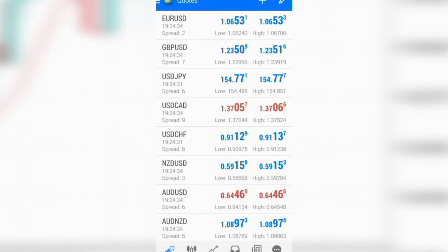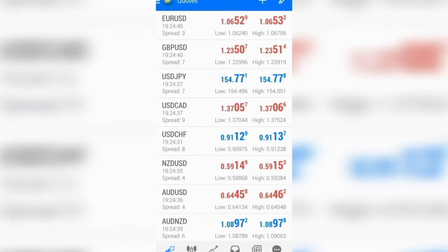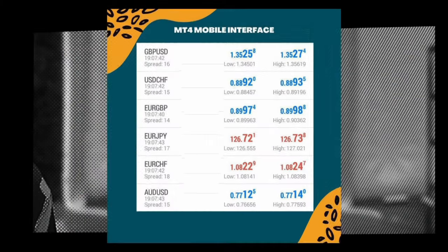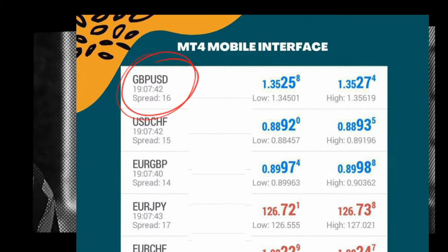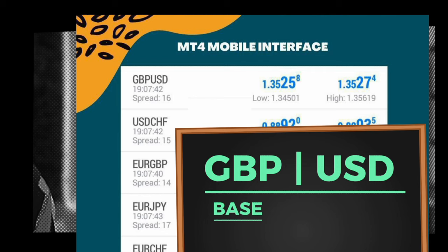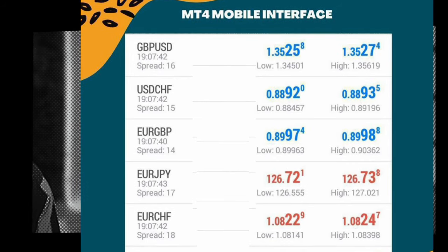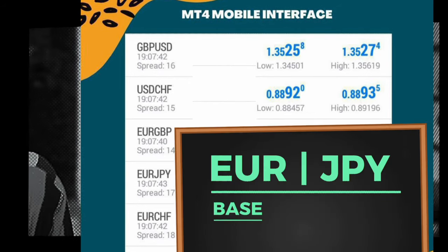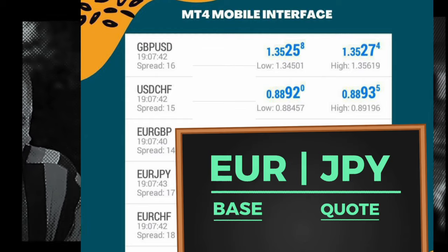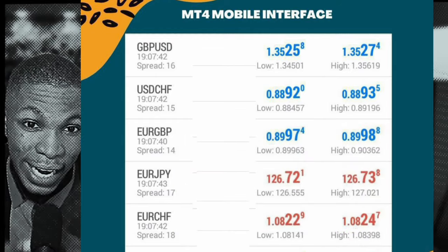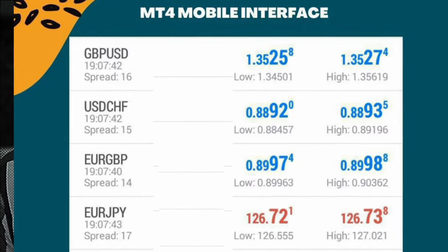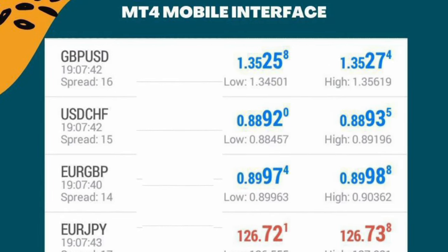I believe everyone has successfully opened their demo account and is on the currency pairs page. Let's take GBP/USD as an example — GBP is stronger than the US dollar, hence GBP is the base and USD is the quote. Another example is EUR/JPY: the Euro is the base and JPY is the quote, because the Euro is stronger than the Japanese Yen.